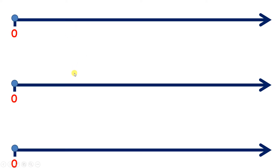On these top two number lines, I'm going to count in steps of four. I'm going to write out the four times table, and on this number line at the bottom, I'm going to add the numbers in the top two lines, and you'll see why I'm doing that in a moment.